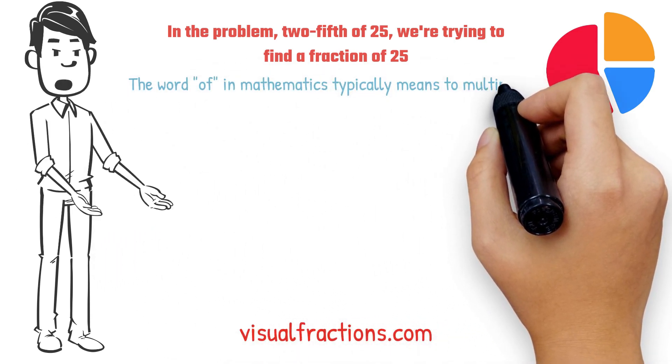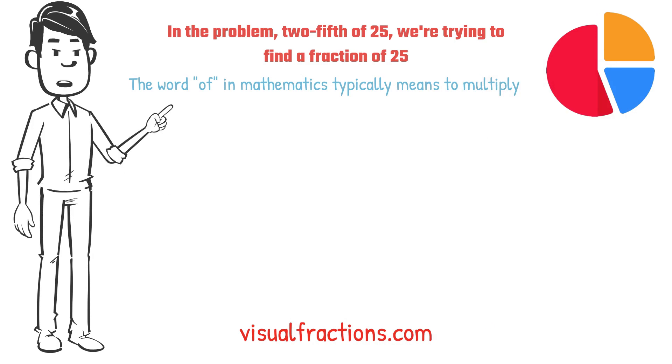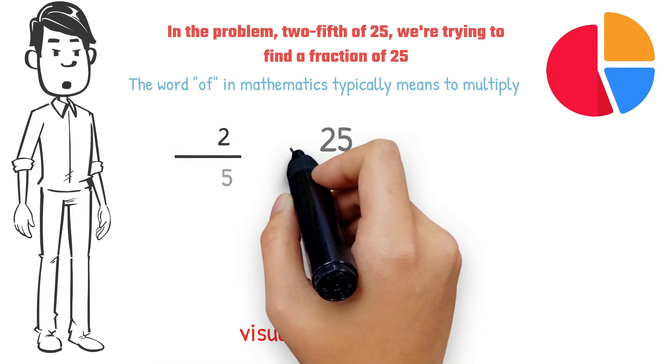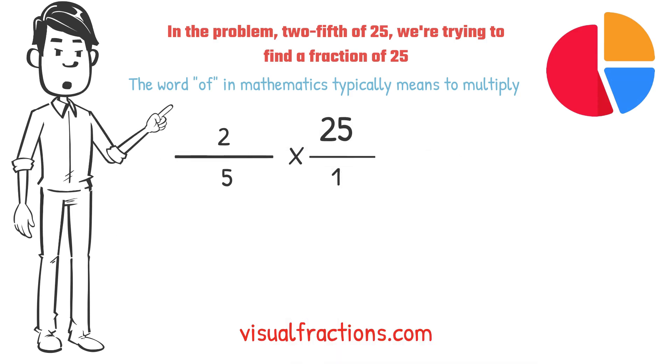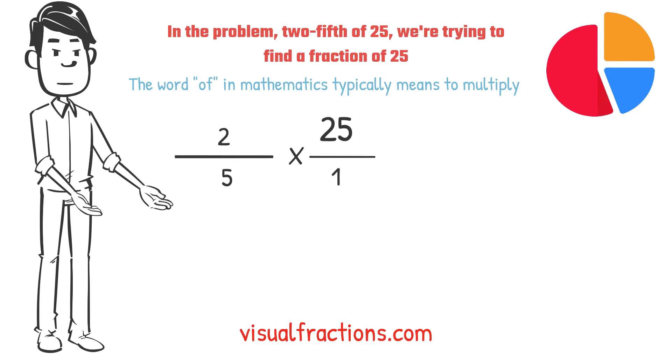The word 'of' in mathematics typically means to multiply, so we rewrite our problem as multiplication: 2 fifths times 25. To simplify the calculation, we first convert our whole number into fraction form, writing 25 as 25 over 1.